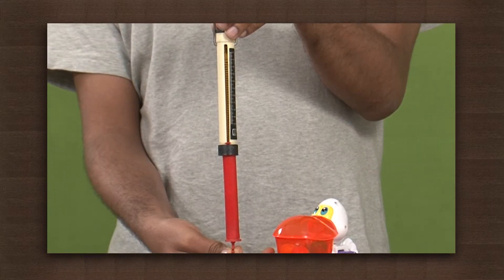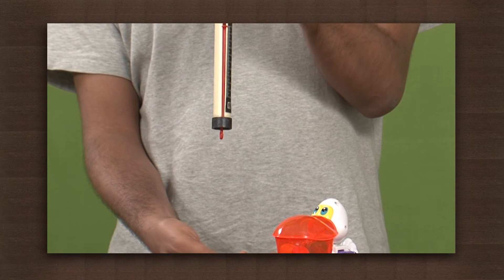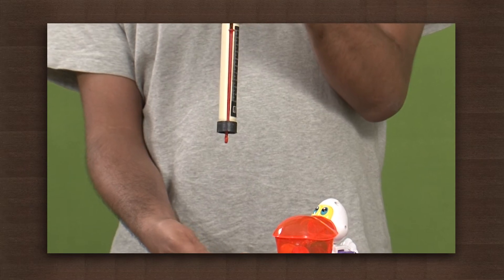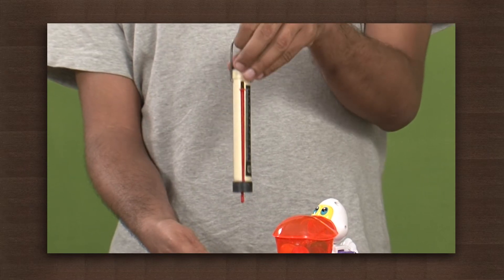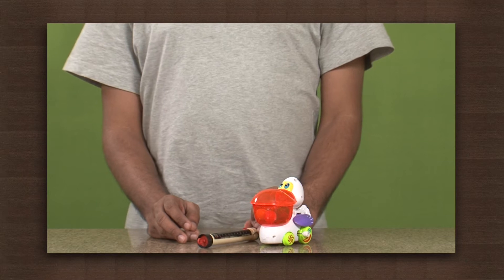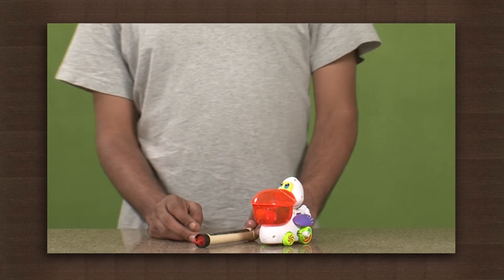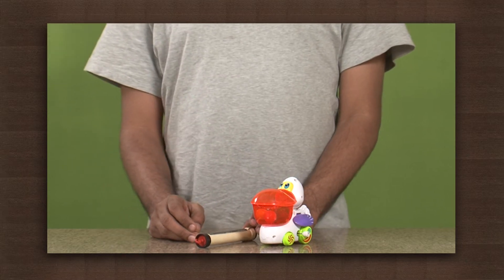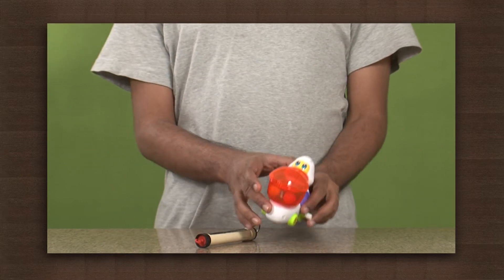Now we will release this hook and see what happens. The spring snaps back to the initial position. So the potential energy stored in the spring was used to do work, which is movement. Every object always tries to release excess potential energy it has by doing some work.